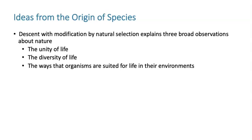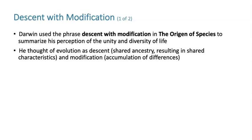Darwin did use the phrase 'descent with modification' in The Origin of Species to summarize what he thought of the unity and diversity of life. He thought of evolution as descent — meaning shared ancestry — which results in shared characteristics.